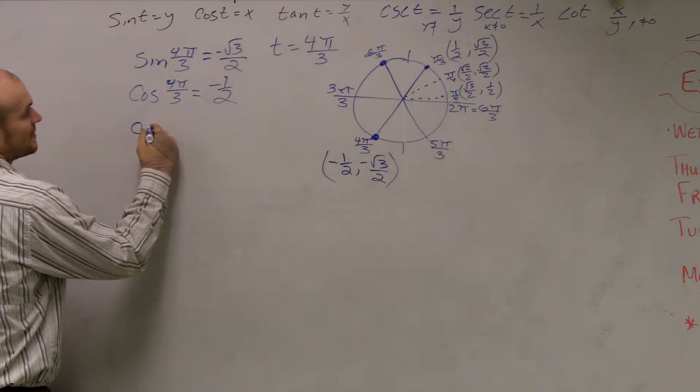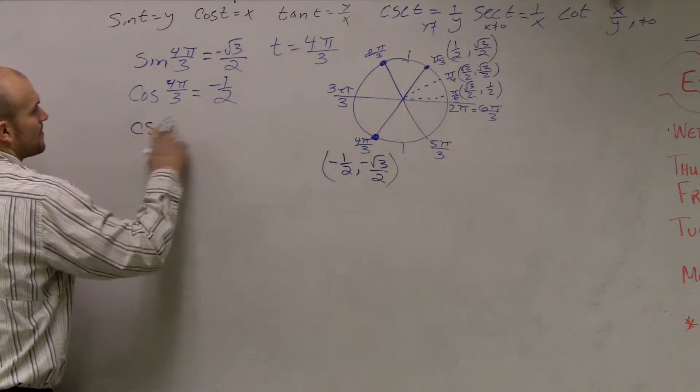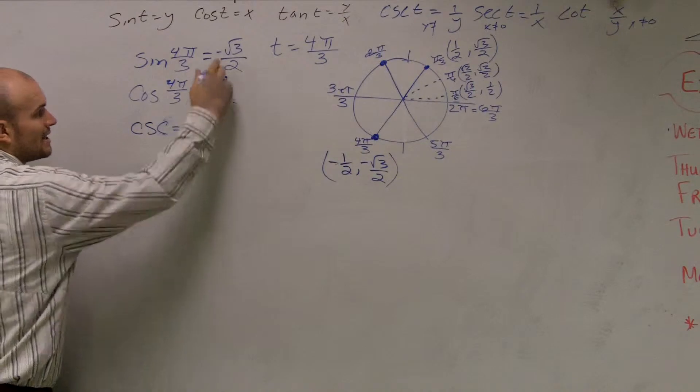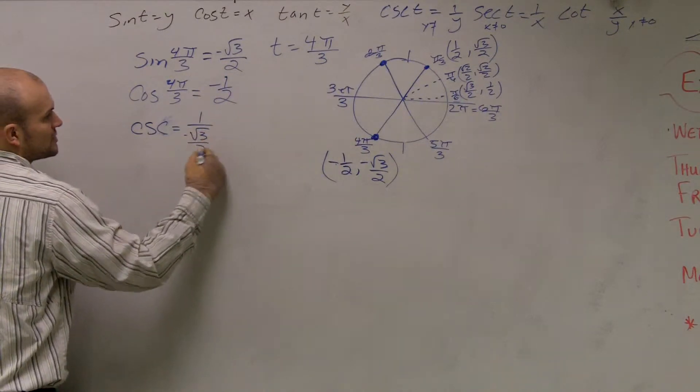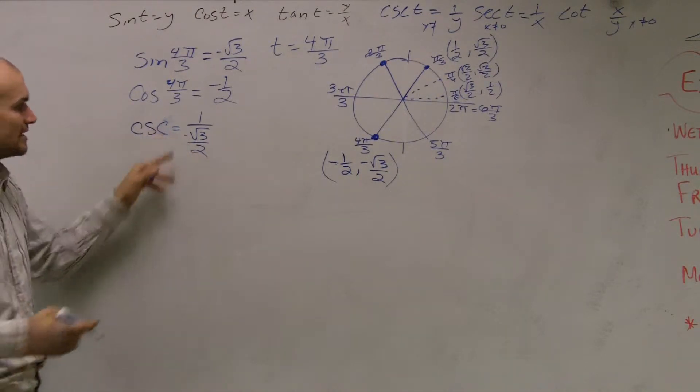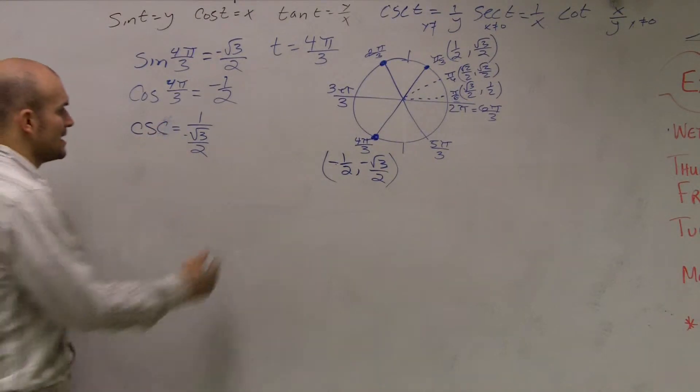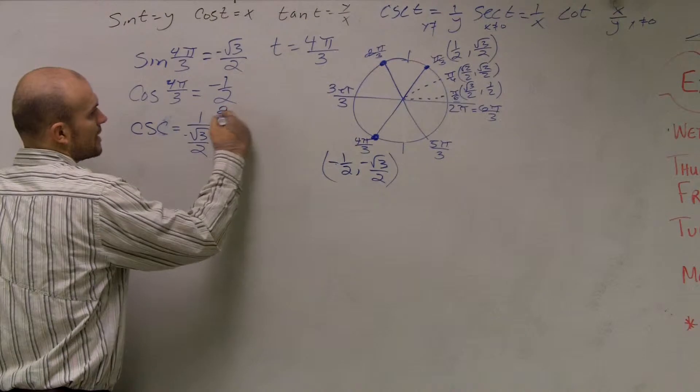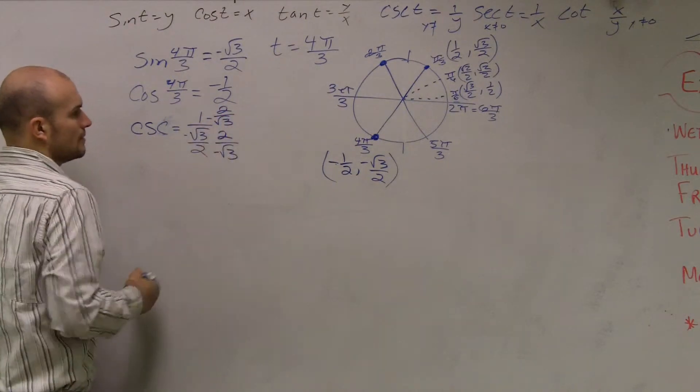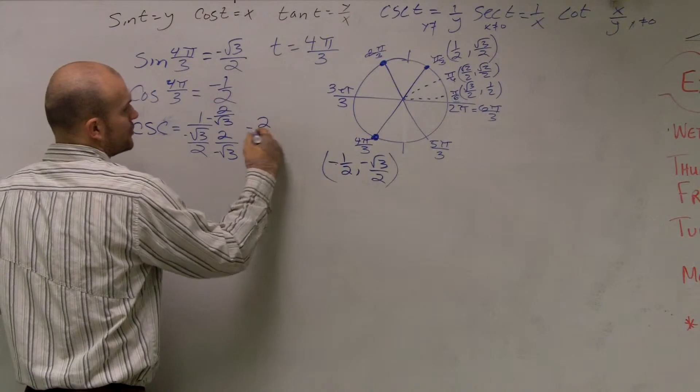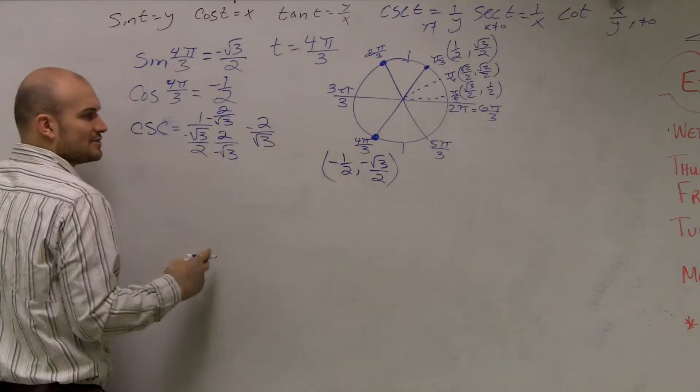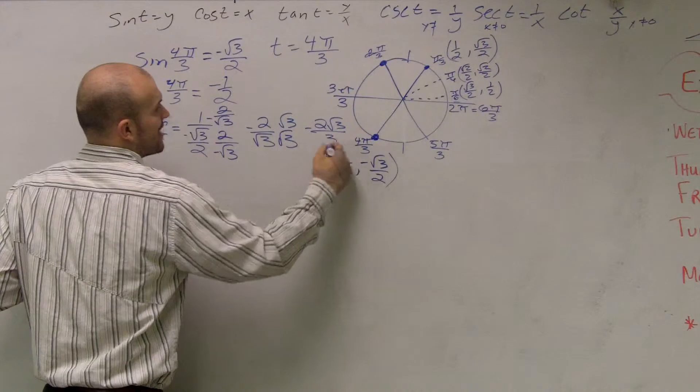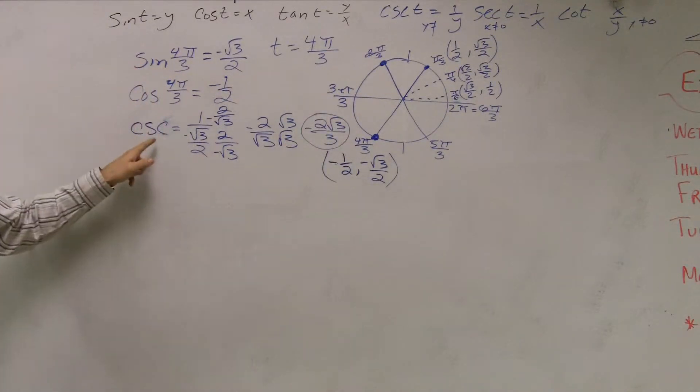Cosecant is the reciprocal of sine. So cosecant is going to be 1 over y, which was negative radical 3 over 2. Which is 2 by 3. Well, again, I can't have a fraction on my bottom, so I need to get rid of that. So I'm going to multiply by the reciprocal, which would be 2 over negative radical 3 on the top and the bottom. That's 2 by 3 by 3. And I have 2 by 3 by 3. So therefore, I have negative 2 over radical 3. Now I need to rationalize the denominator. So I get a negative 2, radical 3, divided by 3. That's for cosecant of...